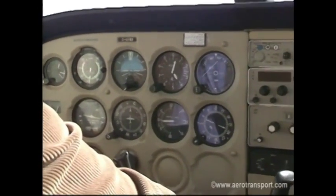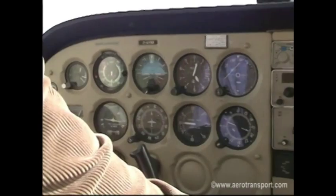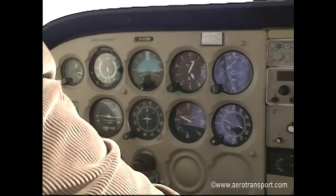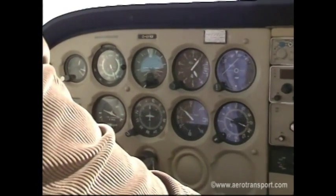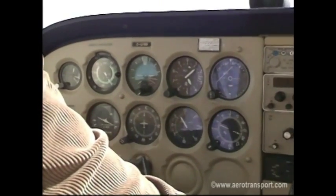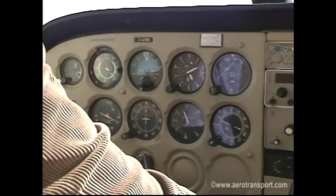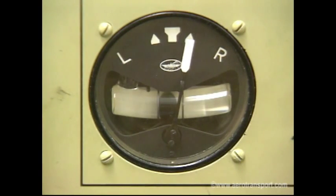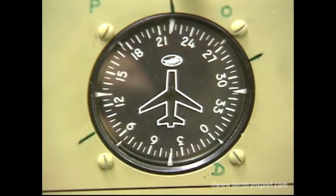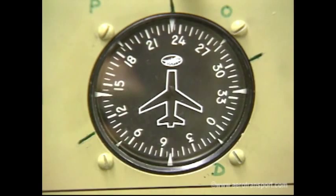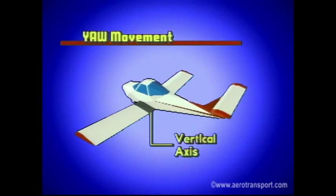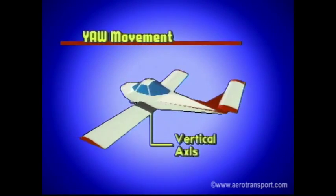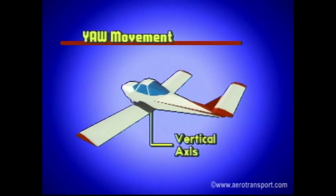In a coordinated bank to the right in a nose-up attitude, you will first see a decrease in airspeed and the aircraft will be above the horizon bar on the attitude indicator. Because you are climbing, the altimeter will show a constant increase in altitude. The needle on the turn and bank indicator will deflect to the right and the ball will be centered. The heading indicator will show increasing degrees of heading.